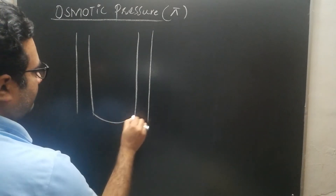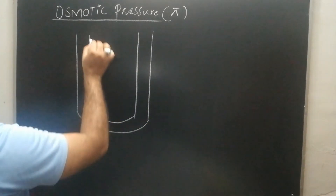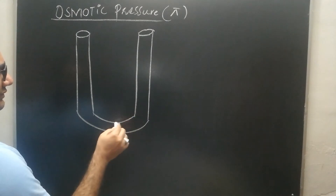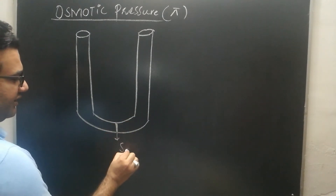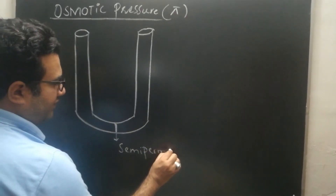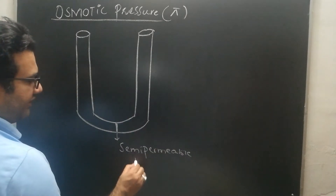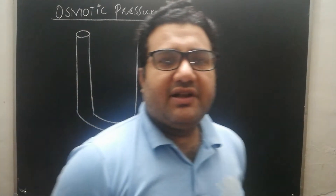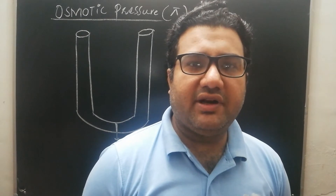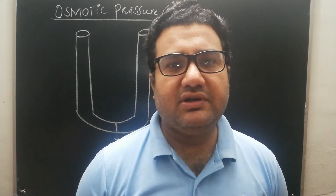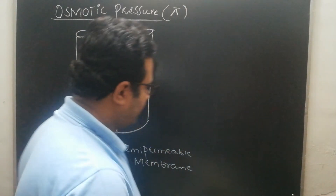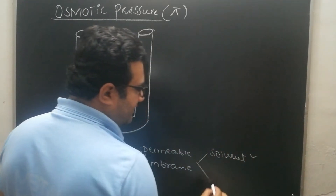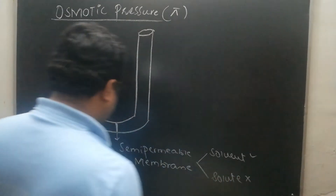Suppose that we have a U-shaped tube having two arms or two limbs, and here between the two limbs there is a membrane which is called the semi-permeable membrane. A semi-permeable membrane is a membrane that allows the solvent particles to pass through, but the solute particles cannot pass through it.